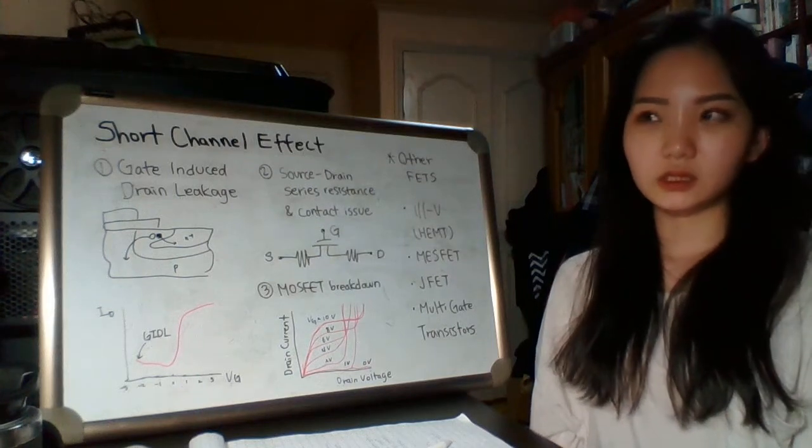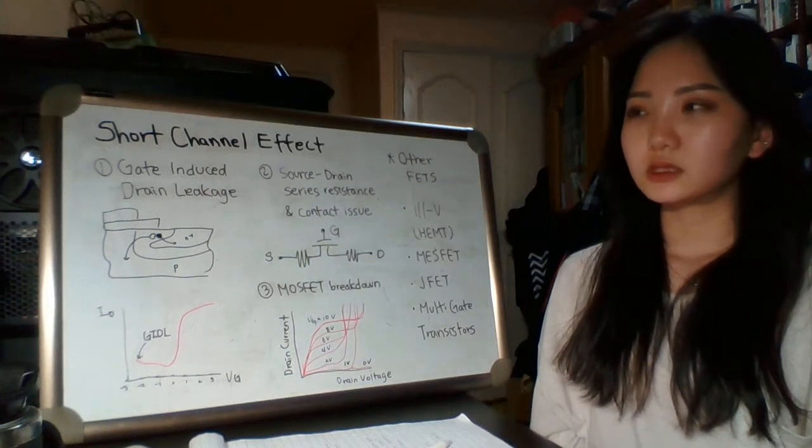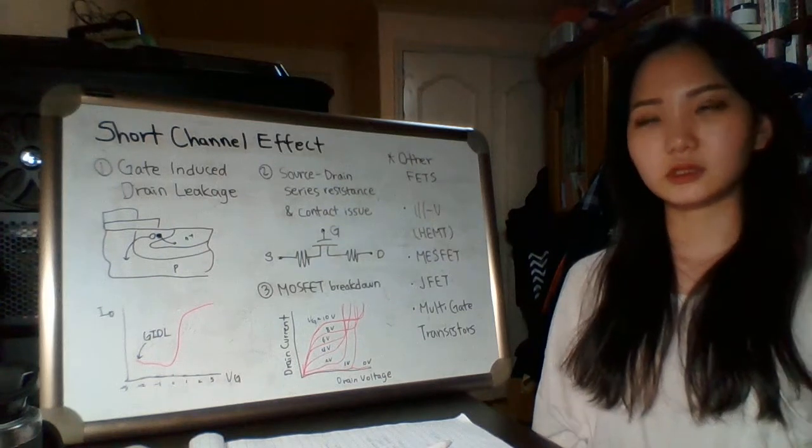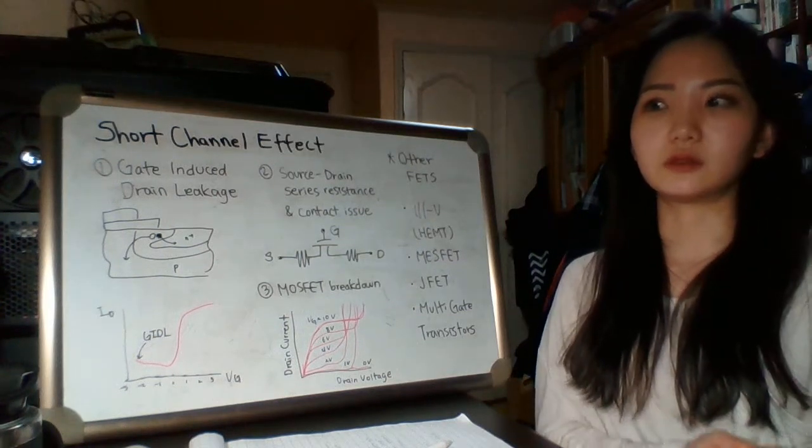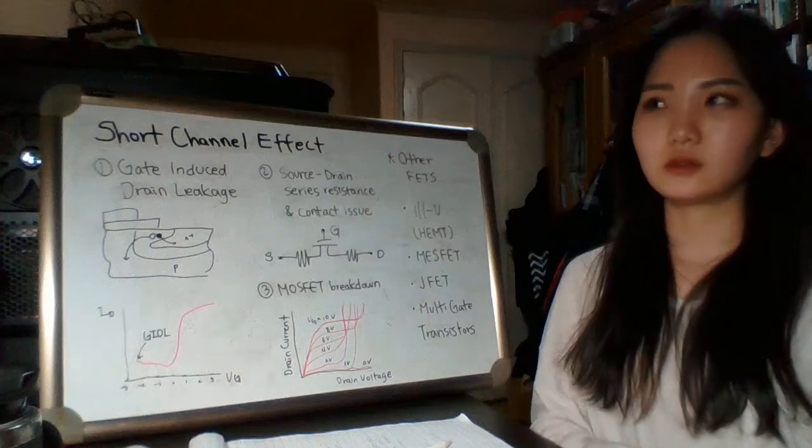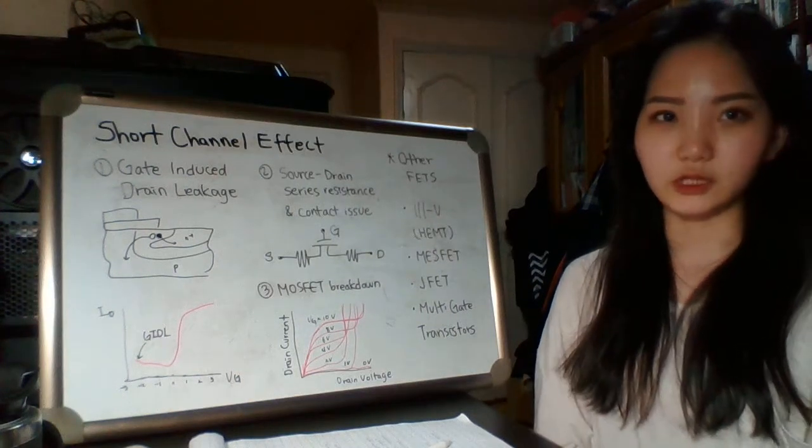JFET is junction FET, and its output current is affected by VDS, or fixed value of VGS.